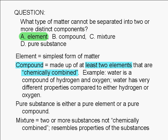For example, water is a compound of hydrogen and oxygen. By passing electricity through the water, we can separate it into hydrogen and oxygen, which have very different properties compared to water.